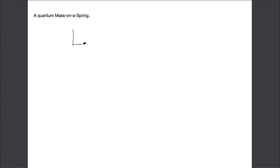In this example, we're going to look at a quantum mechanical mass on a spring. We first want to remind ourselves what we mean by mass on a spring and some of the stuff that we learned about in Physics 1. This isn't really going to happen quantum mechanically, but let's remind ourselves classically what's going on here.